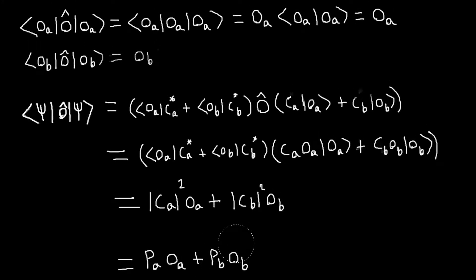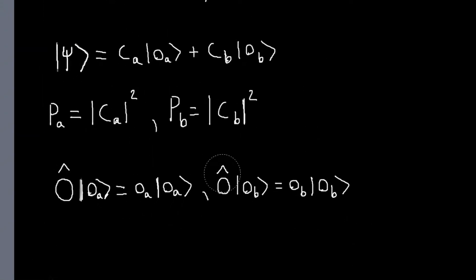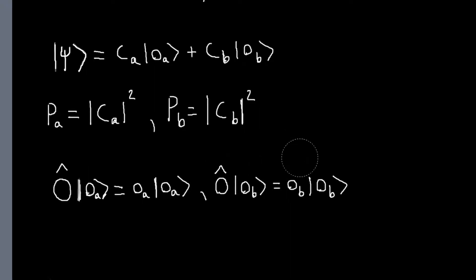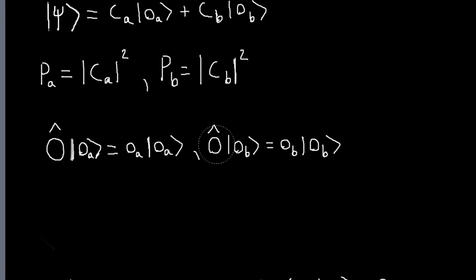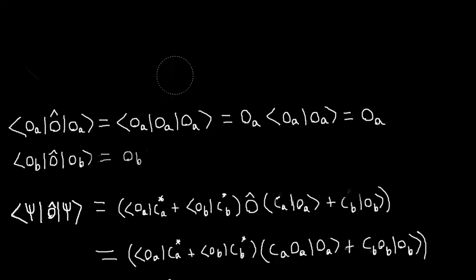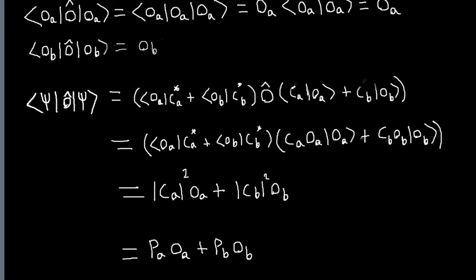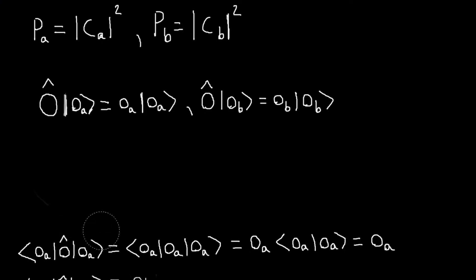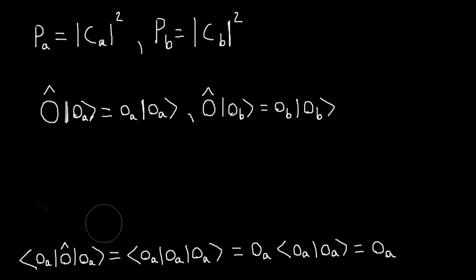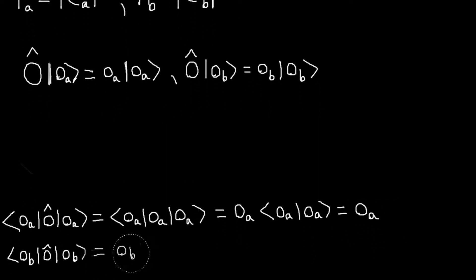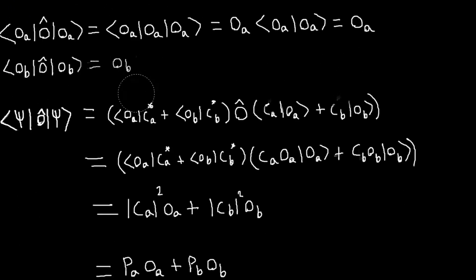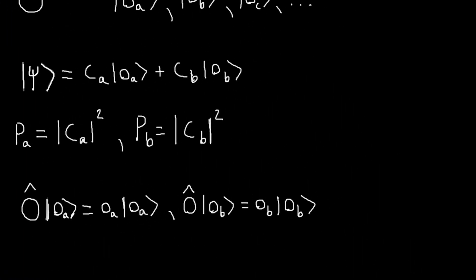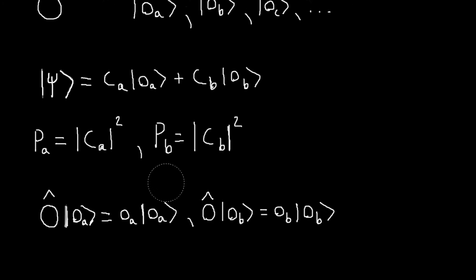For example, if the two values are 1 and minus 1 and I have three systems and I measure 1 for two of the systems and minus 1 for one system, every individual measurement was either 1 or minus 1, but the average value is 1 plus 1 plus minus 1 divided by 3, which is 1/3. So the average value doesn't have to be either OA or OB. That's what the expectation value really tells you. Of course, if you're in the state OA, you can only ever measure OA, so the average is just OA, and similarly for OB. We'll show how to use this and examine an actual system in the next video.